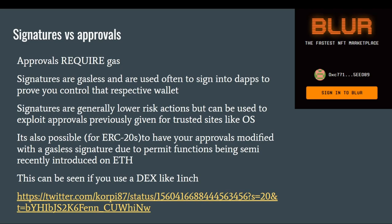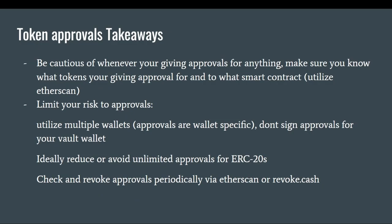Signatures versus approvals: everything discussed previously was about approvals, which require gas — that's the key difference. If you see a sketchy site trying to get you to sign something that requires gas, that's a more obvious red flag. Signatures are a bit sneakier because they're gasless and are often used to sign into dApps — it's a way for the website to verify you control that wallet. Generally signatures are lower risk, but they can actually be used to exploit approvals you've previously given for sites like OpenSea. It's also possible to have ERC-20 approvals modified on platforms like 1inch. Signatures are generally safe if you are actually interacting with the site you think you are — Kevin Rose is the best example of what can go wrong.